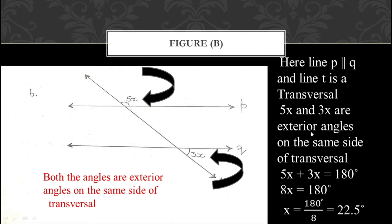So the equation becomes: 5X + 3X = 180°. Adding 5X and 3X gives 8X = 180°. Dividing both sides by 8, the answer comes in decimal: X = 22.5°. You can also write your answer as a mixed fraction if you prefer. So the value of X in part B is 22.5 degrees.